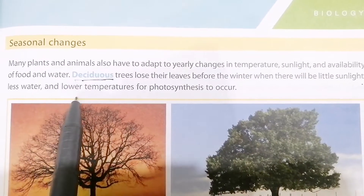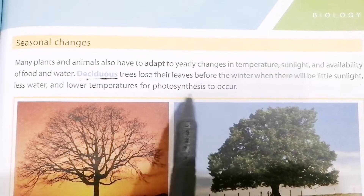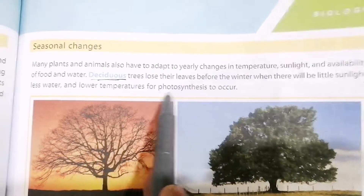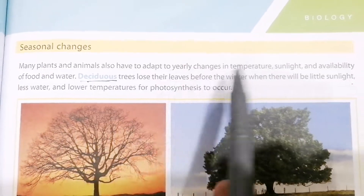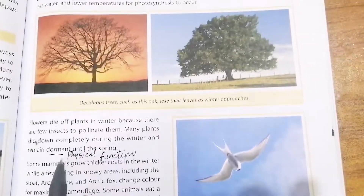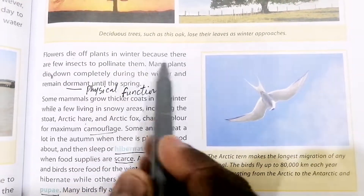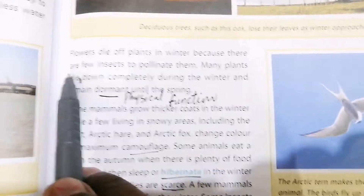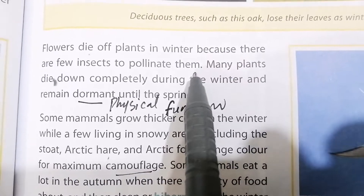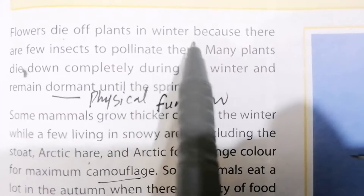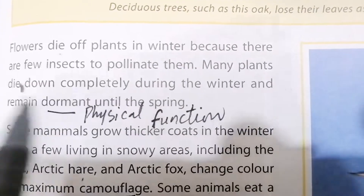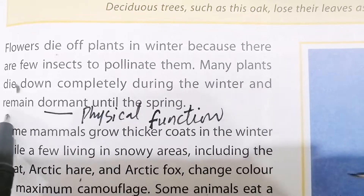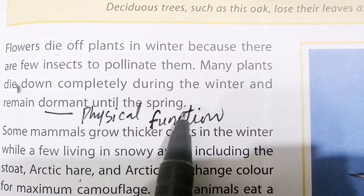In winter there is less sunlight, less water, and lower temperatures, making photosynthesis difficult. As a result, leaves fall, and flowers die off in winter because there are few insects to pollinate them. Many plants die down completely during the winter and remain dormant until spring.